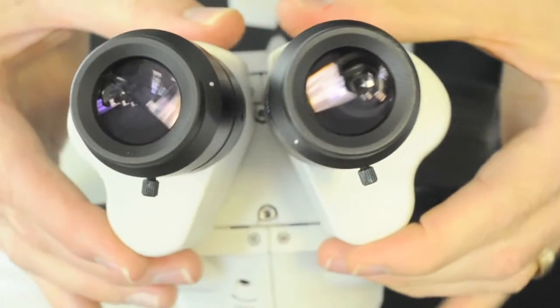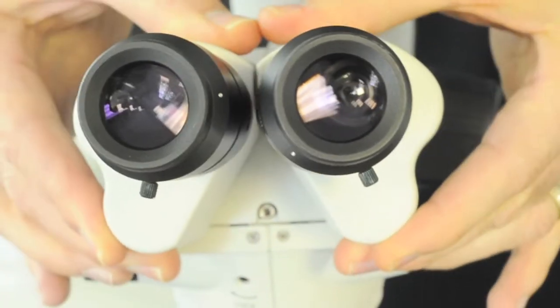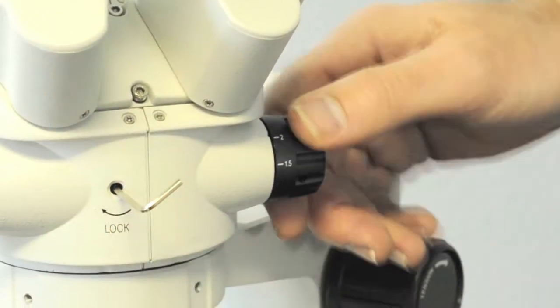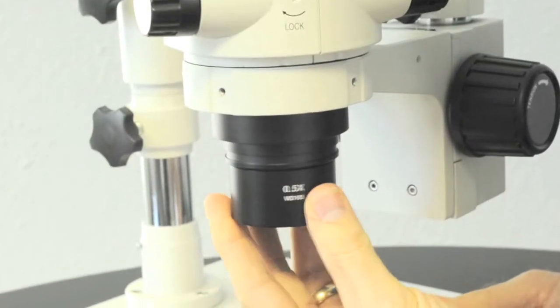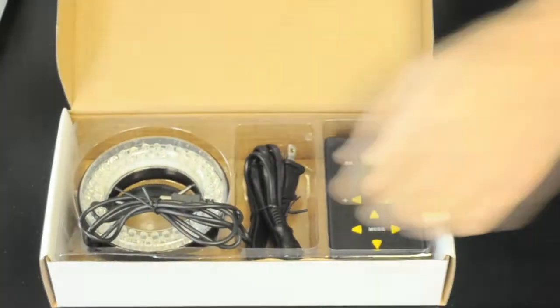The stereo head provides a clear bright view with 7x to 45x magnification and can be locked at a specific zoom point using the locking feature as shown. The included .5x barlow lens can be attached to provide extra working distance.